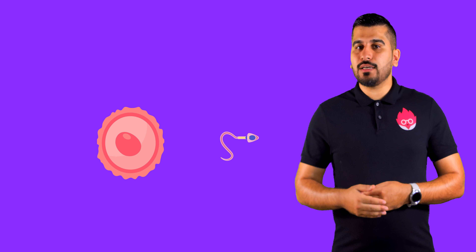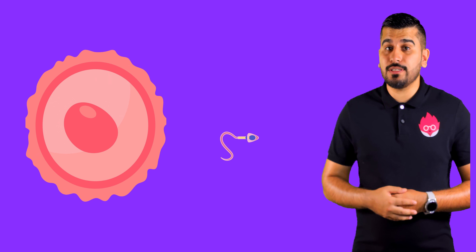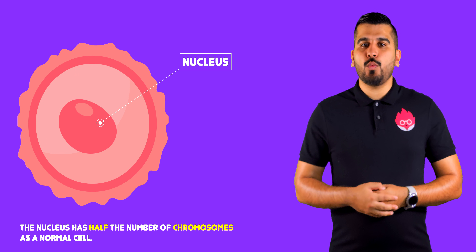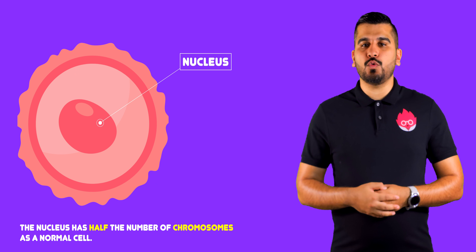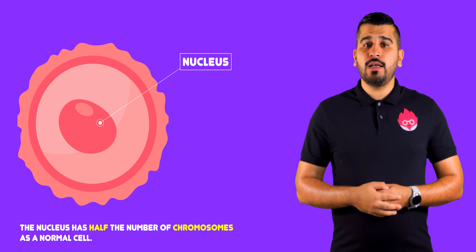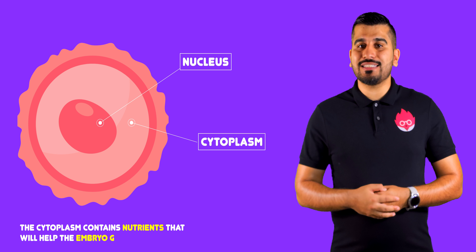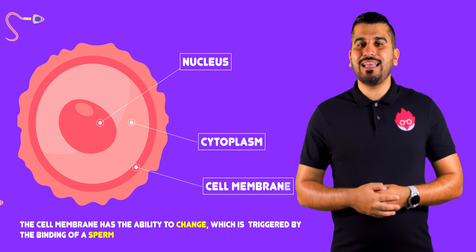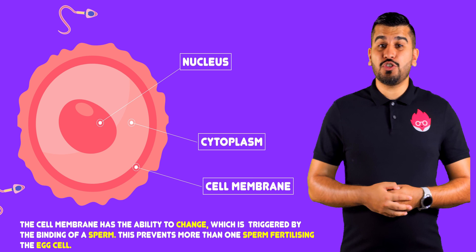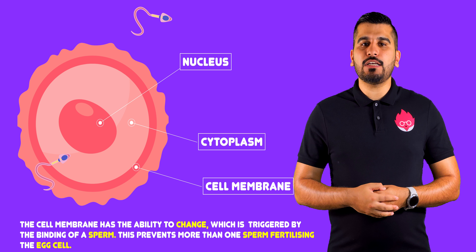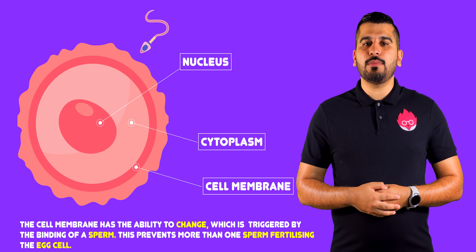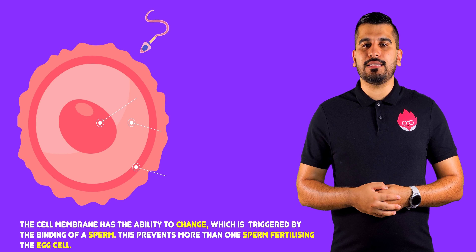The female gamete is much larger than the male gamete. It contains a haploid nucleus with half the number of chromosomes as a normal cell. The cytoplasm contains nutrients that help the embryo grow. The cell membrane has the ability to change, which is triggered by the binding of a sperm, and this prevents more than one sperm from fertilizing the egg.